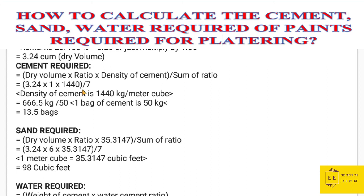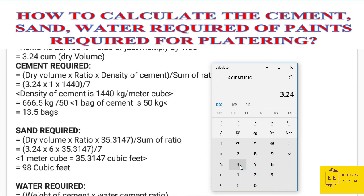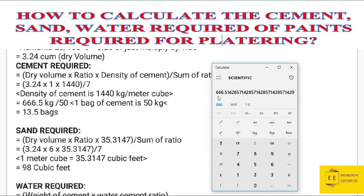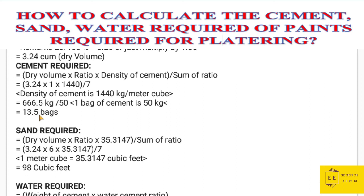Dividing by the sum of the ratio — 1 plus 6 equals 7. Calculating: 3.24 × 1 × 1440 / 7 = 666.5 kg of cement. To find the number of cement bags, divide by 50 since one bag weighs 50 kg. This gives approximately 13.5 bags of cement required.